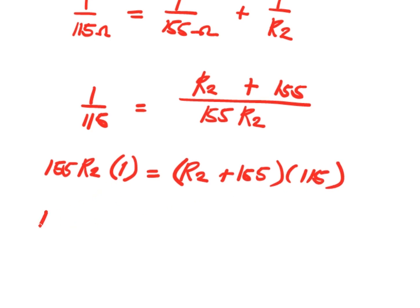This becomes 155 R2 equals 115 R2 plus 155 times 115. 155 times 115 is 17,825.